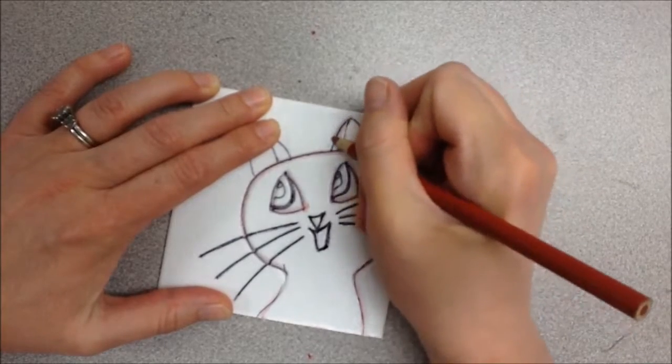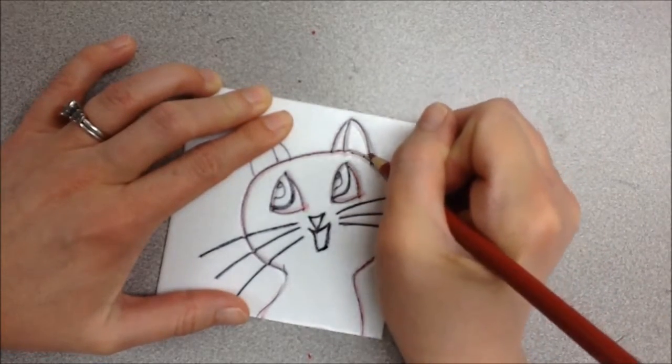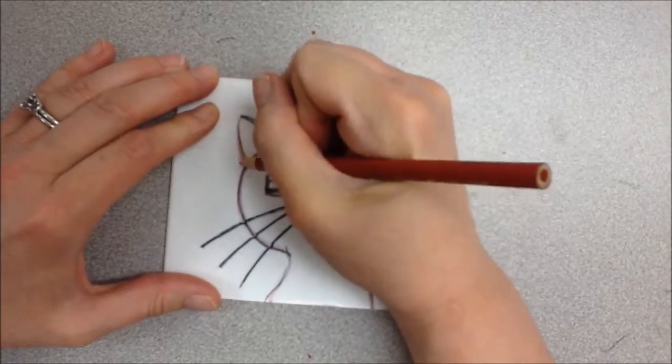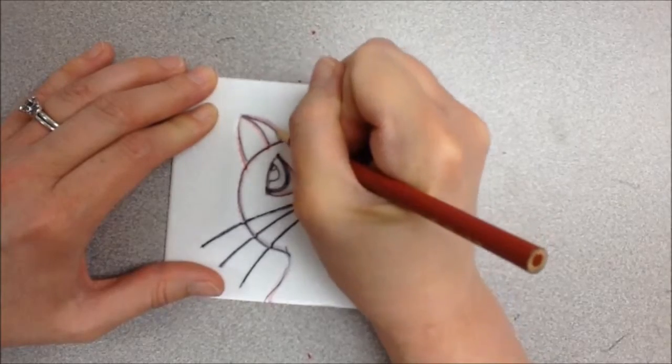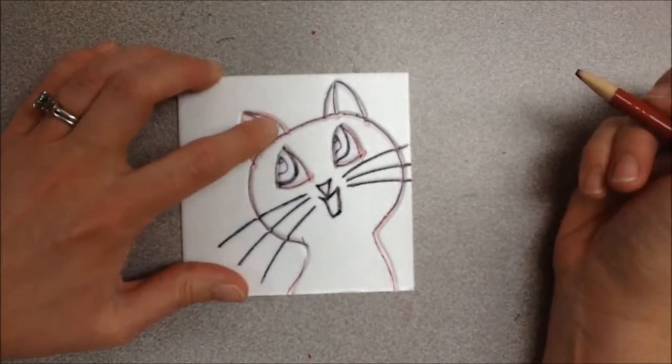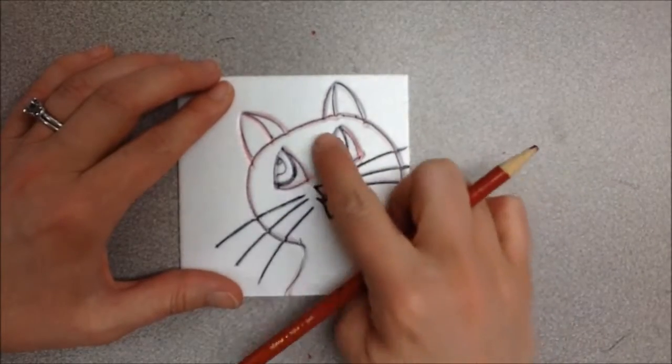And you have to remember right now when we print this, it's going to be a negative. Which means when I roll the ink on here and push it down on paper, the only places that are going to stay white like the paper that I printed onto are the places where I've dented it or pushed it in.